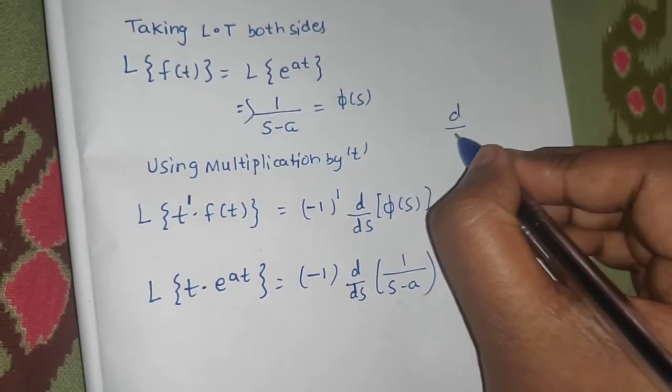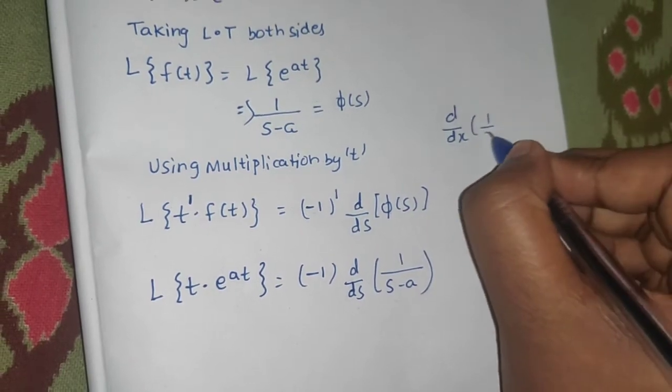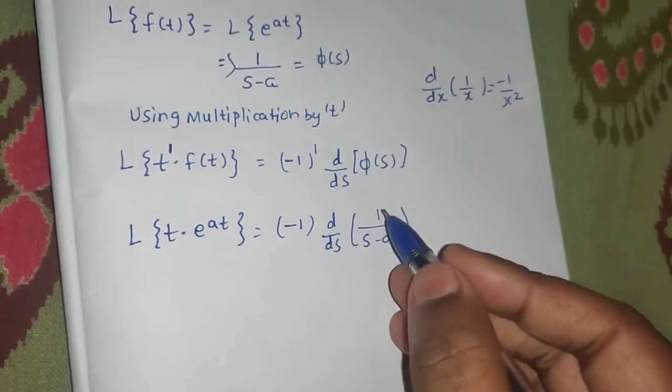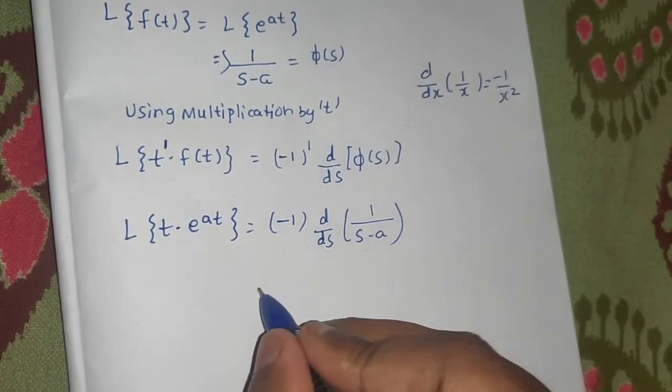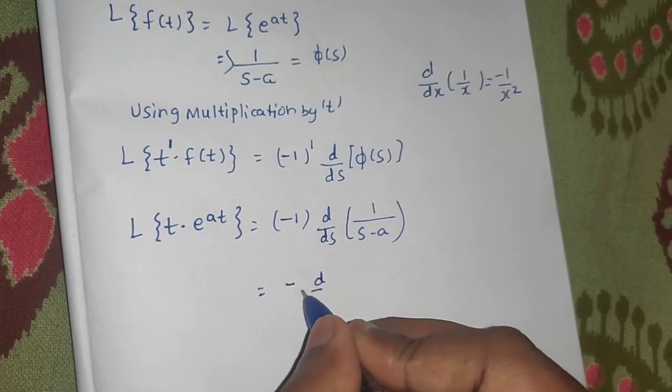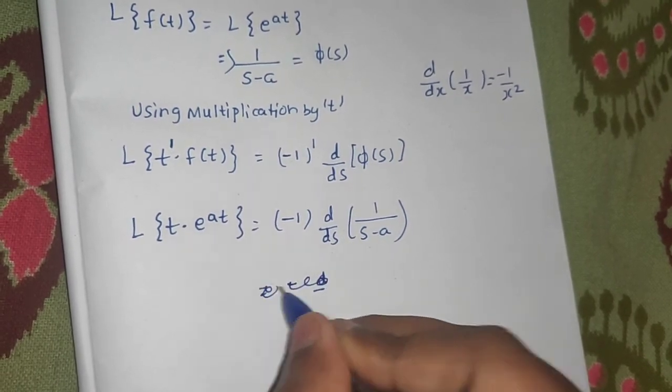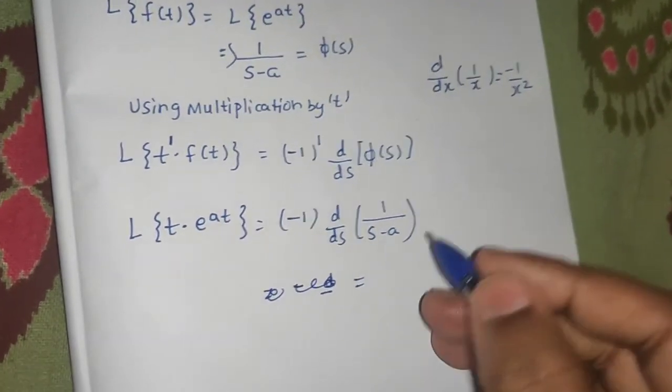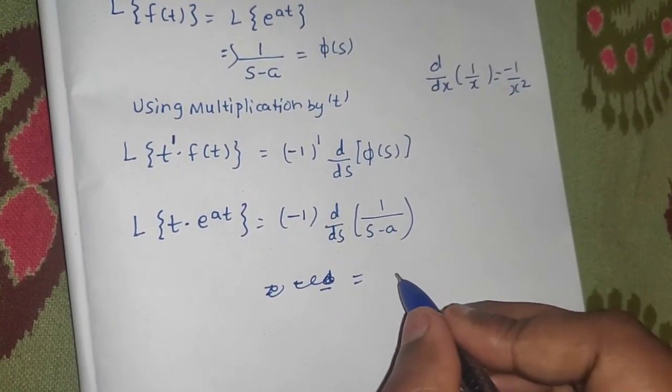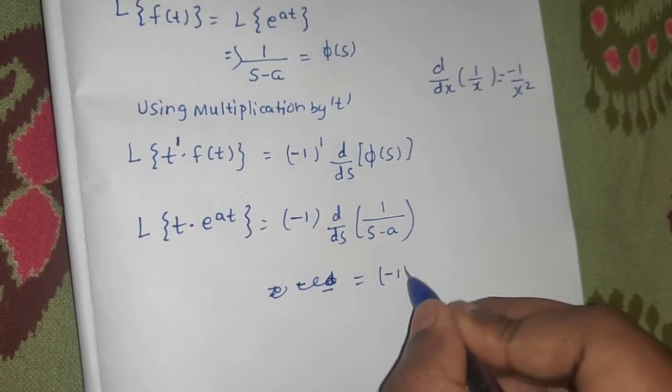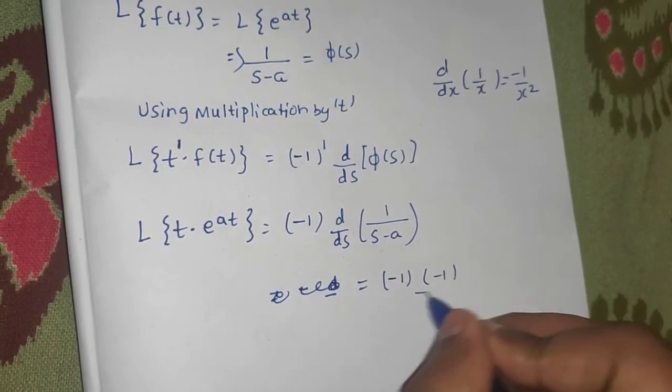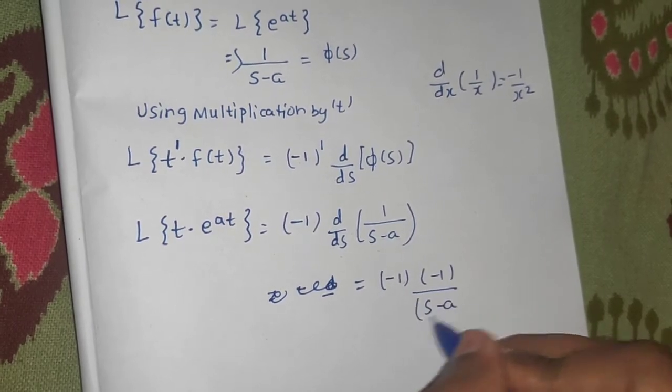You know that derivative of 1 upon x is minus 1 by x square. So, derivative of 1 upon s minus a will be nothing but minus 1 upon s minus a. Minus 1 is outside and its derivative is minus 1 divided by s minus a whole square.